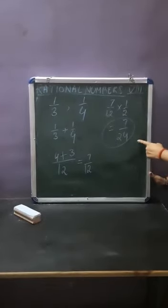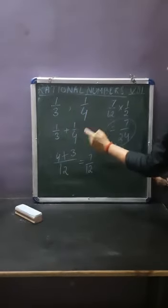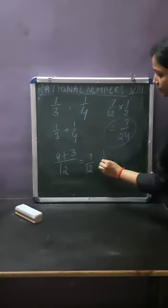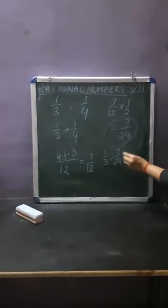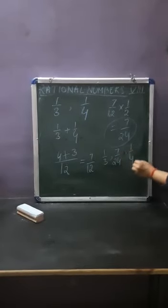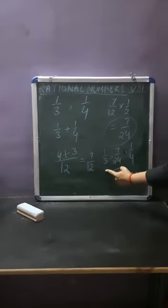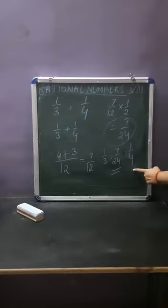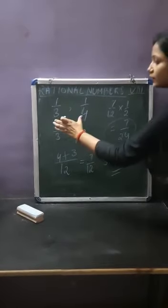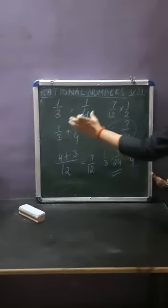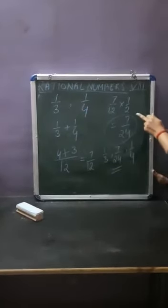So this rational number 7 upon 24 is coming between 1 upon 3 and 1 upon 4. We can write it as: 1 upon 3, then 7 upon 24, then 1 upon 4. If you want to get any rational number between two rational numbers, you will add the two numbers and multiply by 1 upon 2.